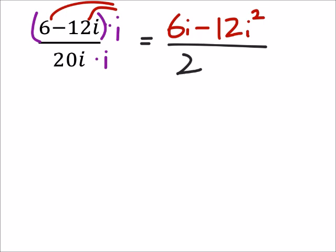And then in the denominator we've got this 20 and again I've got i times i which makes that an i squared as well. So simplifying this a little bit further, I've still got 6i but now I've got minus 12.